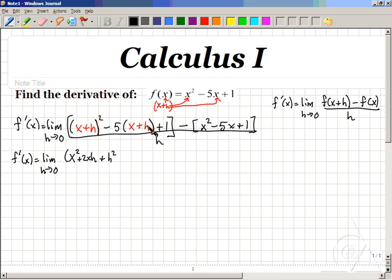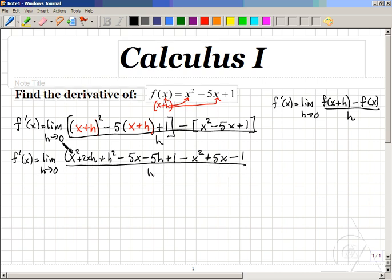Distributing the minus 5 will be minus 5x minus 5h plus 1. Distributing the minus sign would become minus x squared plus 5x minus 1. And in fact, we don't need that original parenthesis here. Now, if we've done this correctly, every term in the end will cancel with terms along the way, leaving only expressions that have an h in it.